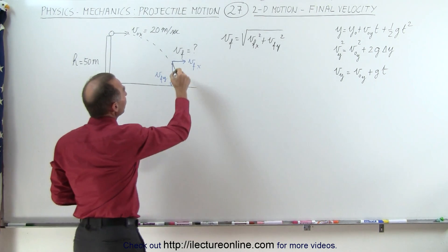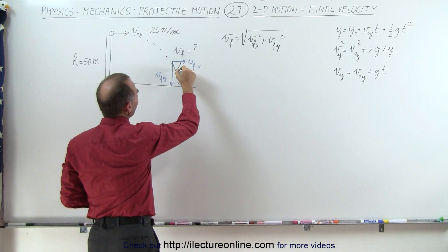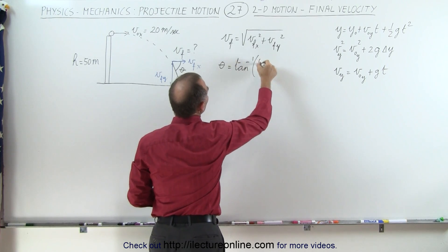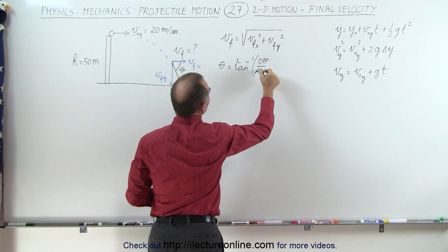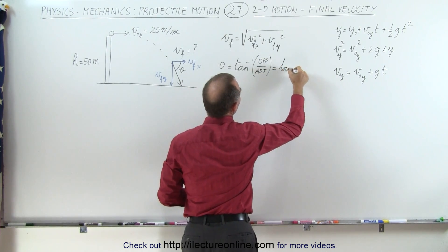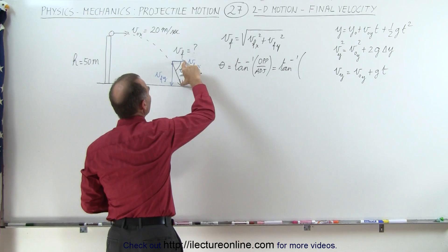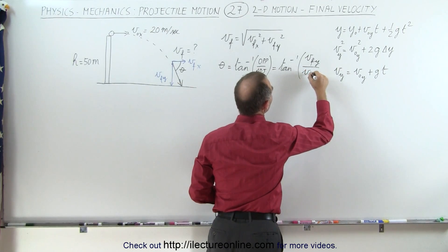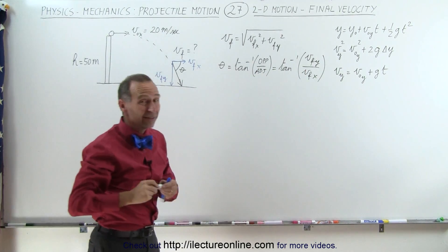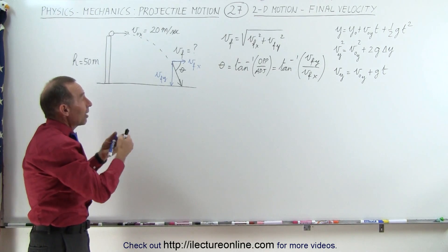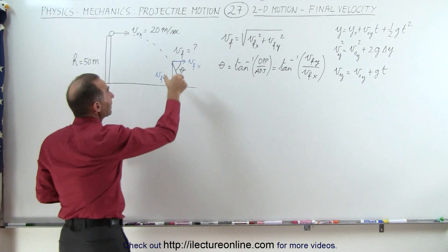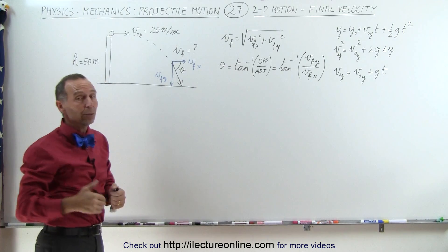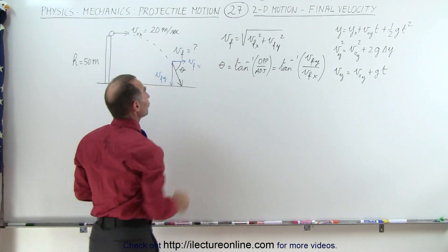We also want to find the angle relative to the horizontal, theta. Theta can be found by taking the arctangent of the opposite side divided by the adjacent side of that angle. In this case that equals the arctangent of v_final_y divided by v_final_x. So to summarize: find x and y components, use the Pythagorean theorem for magnitude, and use arctangent for direction.